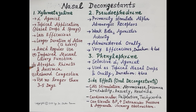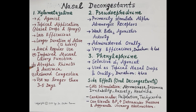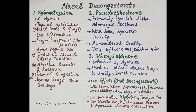Long-term use of xylometazoline can also cause atrophic rhinitis and anosmia. Anosmia is loss of the sense of smell and occurs due to persistent vasoconstriction induced by nasal decongestants. When xylometazoline is used for longer than 3 to 5 days, many patients may experience rebound congestion after withdrawal of the drug.